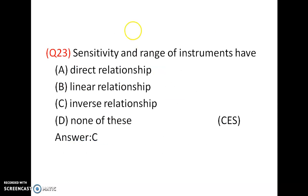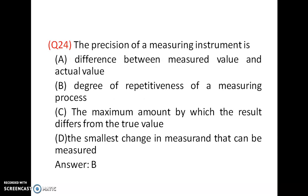Sensitivity and range of instruments have an inverse relationship — as I already explained, sensitivity and range have an indirect relationship. Answer is C. And the precision of a measuring instrument is the degree of repetitiveness of a measuring process. Answer is B.